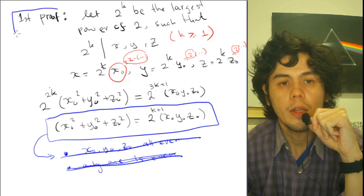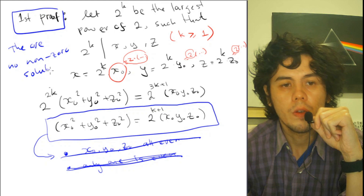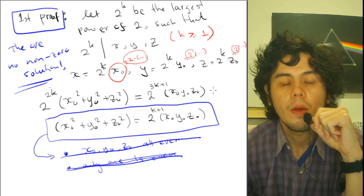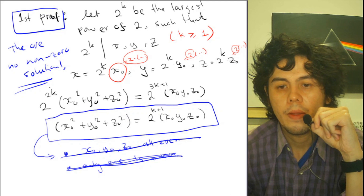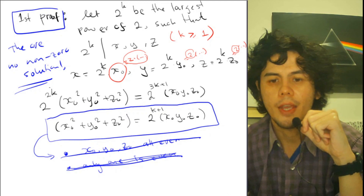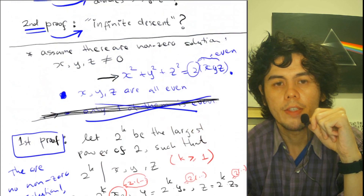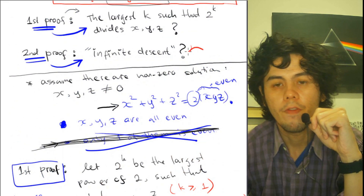So the first proof is done — there are no non-zero solutions, because we have a contradiction if the solution is non-zero. Now I will continue to the second proof, which uses infinite descent.